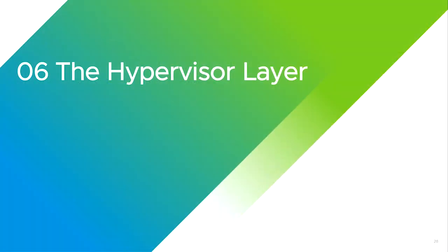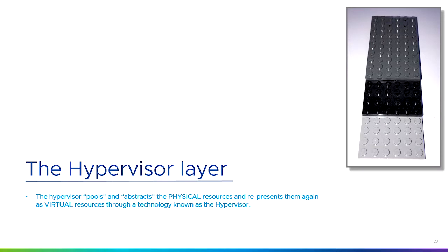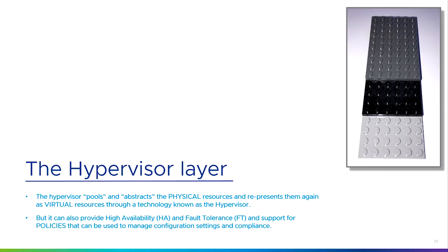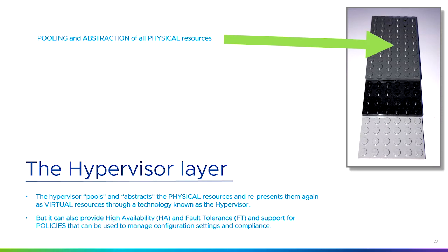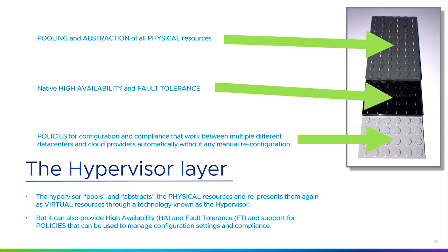The next layer is the hypervisor layer. The hypervisor layer does a couple of things — I'm going to oversimplify it here. First, it pools and abstracts the physical resources and represents them as virtual resources: physical compute, storage, and networking represented back out as virtual compute, virtual storage, and virtual networking. It can also provide high availability and fault tolerance, and support for policies that can be used to manage configuration settings and compliance across different data centers and cloud providers without any need for manual configuration.